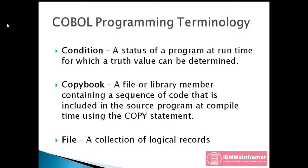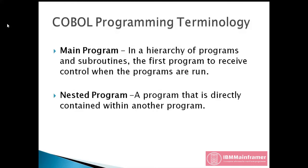Copy book — a file or library member containing a sequence of code that is included in the source program at compile time using the copy statement. File — a collection of logical records. Main program — in a hierarchy of programs and subroutines, the first program to receive control when the programs are run. Nested program — a program that is directly contained within another program.